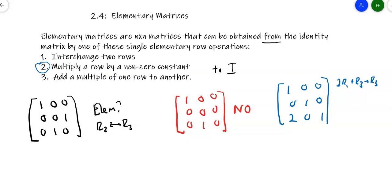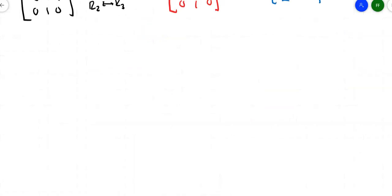What do these elementary matrices actually do? Elementary matrices are the equivalent of the row operations we performed during Gaussian elimination. Instead of doing the operation directly to a matrix, you can multiply by an elementary matrix and it will carry out the reduction for you. The other important thing is that elementary matrices are invertible, so you can retrace your steps.